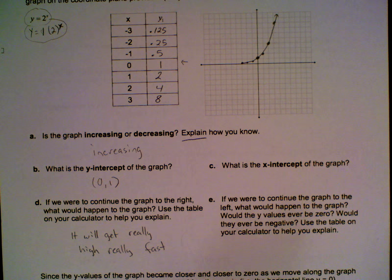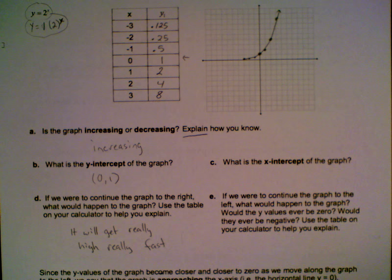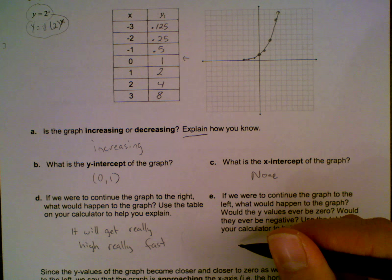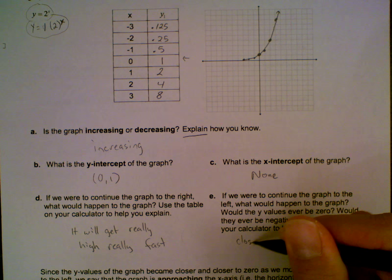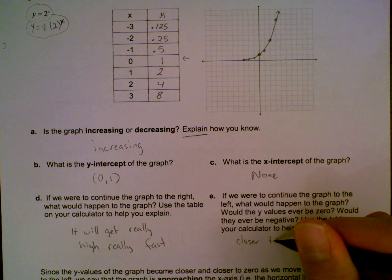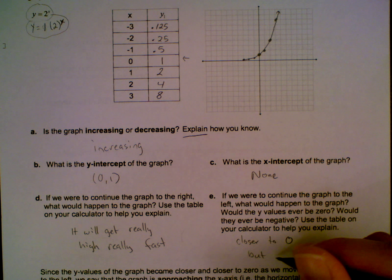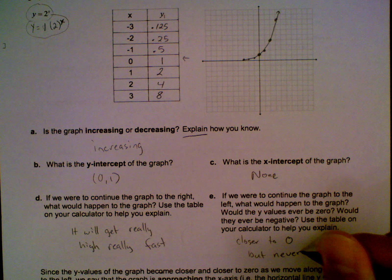So if we go back to C, what is the x-intercept of the graph? There's none. There is no x-intercept here, because it's never actually going to reach 0. If we were to continue the graph to the left, what would happen to the graph? So it's going to get closer to 0, but never touch or actually cross 0.